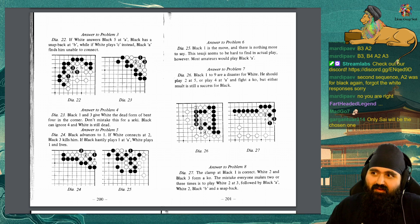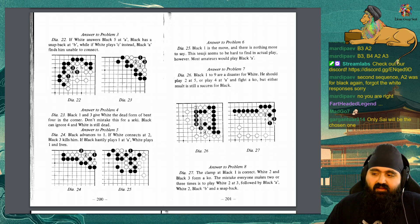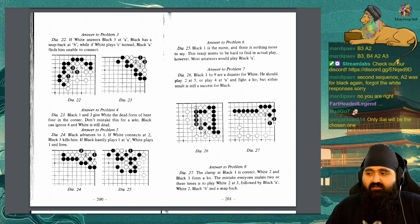Diagram 19, Problem 6: Black to play and capture the 8 white stones to the left. If you solve the last problem, this one will not detain you. Problem 7: Black to play. There is nothing he can do inside white's territory. There is nothing difficult about it either. This problem could even be called easy. Problem 8: Black to play. He has a strong endgame move. The answer involves ko, but not black A, white B, black C. If black plays A, white will reply at C. Answer to problem 3, Diagram 22: If white answers black 5 at A, black has a snapback at B. While if white plays C instead, black A finds him unable to connect.